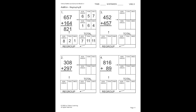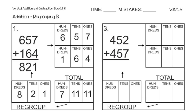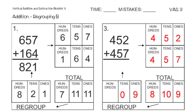Let's move on to page 11, number 3: 452 plus 457. I put 4 in hundreds, 5 in tens, 2 in ones for the first number, and 4 in hundreds, 5 in tens, 7 in ones for the second. Adding down: 2 ones plus 7 ones is 9 ones; 5 tens plus 5 tens is 10 tens; 400s plus 400s is 800s. Can I regroup in the ones column? No, I don't have at least 10. Can I regroup in the tens? Yes — I take 10 away, leaving 0, and add 1 into the hundreds, making 9. My final answer is 909.